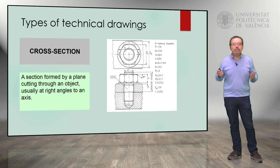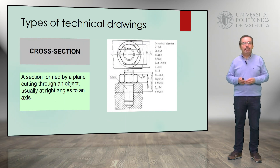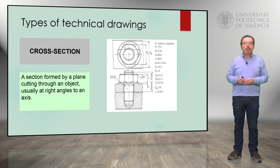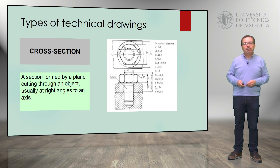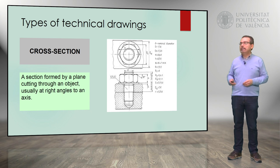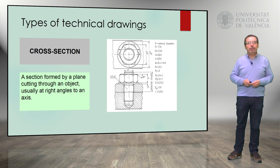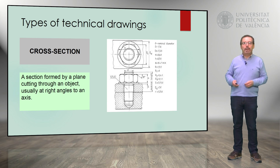A cross-section is a section formed by a plane cutting imaginarily through an object, usually at right angles to an axis. Here we have an example of this type of drawing.